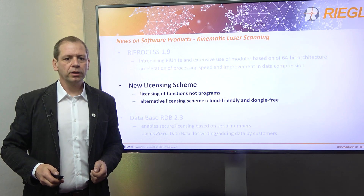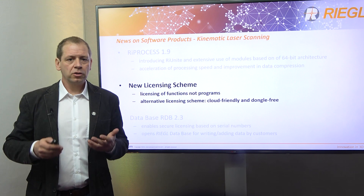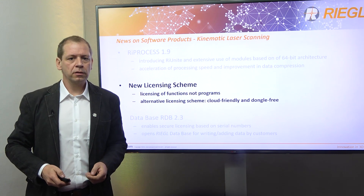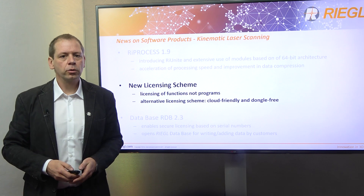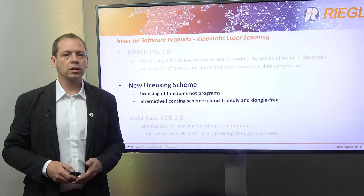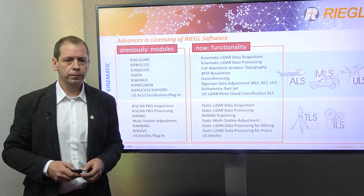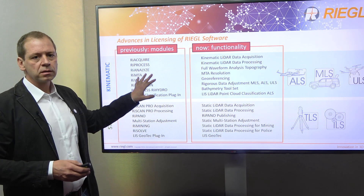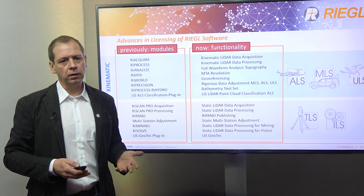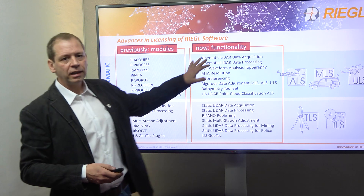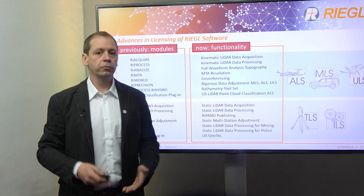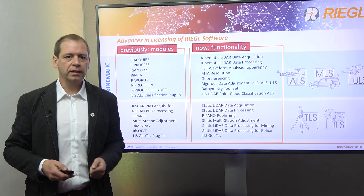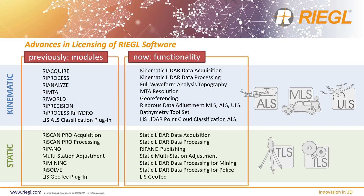The next slides are about our new licensing concept. Its main change is that functions are now licensed instead of the software itself. We also introduce a new licensing scheme which is cloud-friendly and does not require a dongle. In the past, a license covered the use of one or more instances of a software, like RAI Analyze, RAIM-TOE, or RAI World. Now, it is the functionality which requires a license — for example, full waveform analysis, resolving range ambiguities, and geo-referencing. The reason for this change becomes obvious due to the combination of several functions in one common module like RAI Unite.